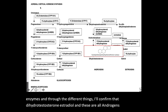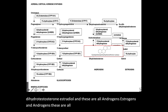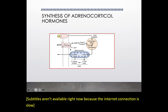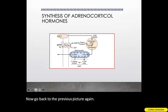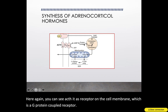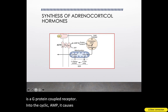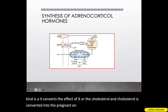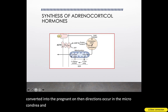So ACTH drives the formation of mineralocorticoids, glucocorticoids, and androgens through the rate-limiting step from the enzyme desmolase acting on cholesterol. ACTH has a G-protein coupled receptor on the cell membrane; through cyclic AMP it causes formation of protein kinase A, which acts on cholesterol and converts it to pregnenolone. The reactions occur in the mitochondria and eventually the different adrenocortical hormones are produced and transported back into the bloodstream.